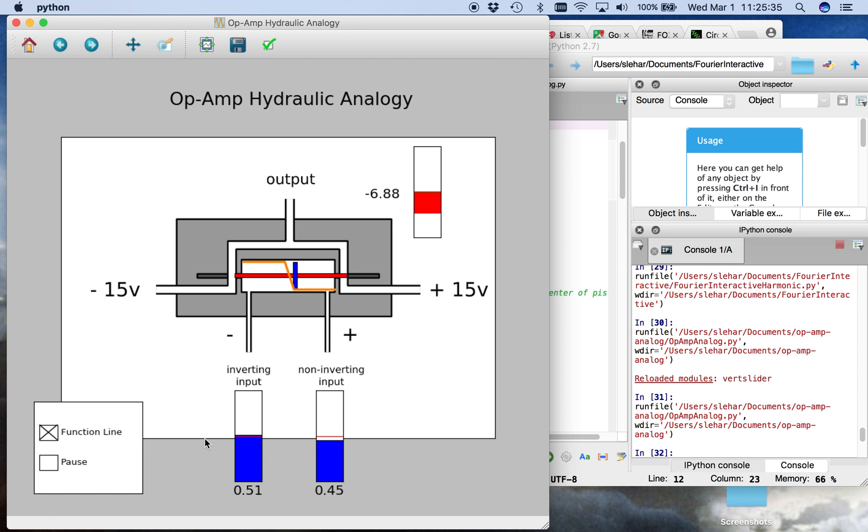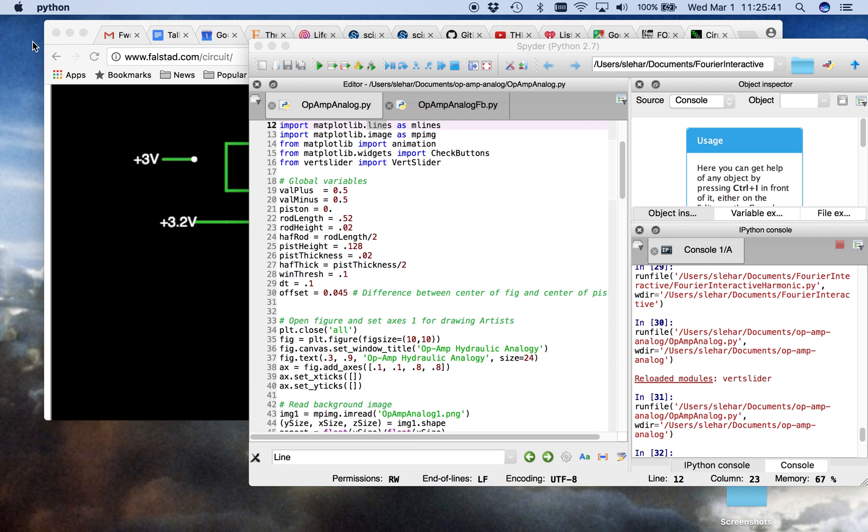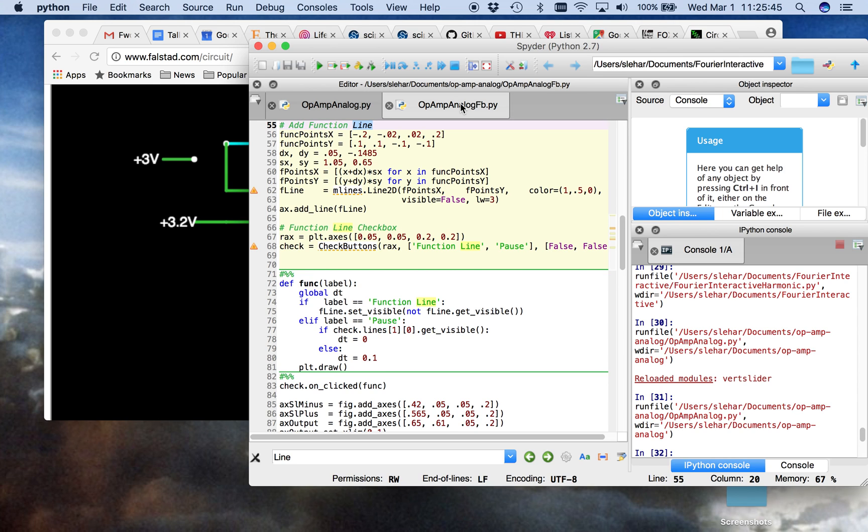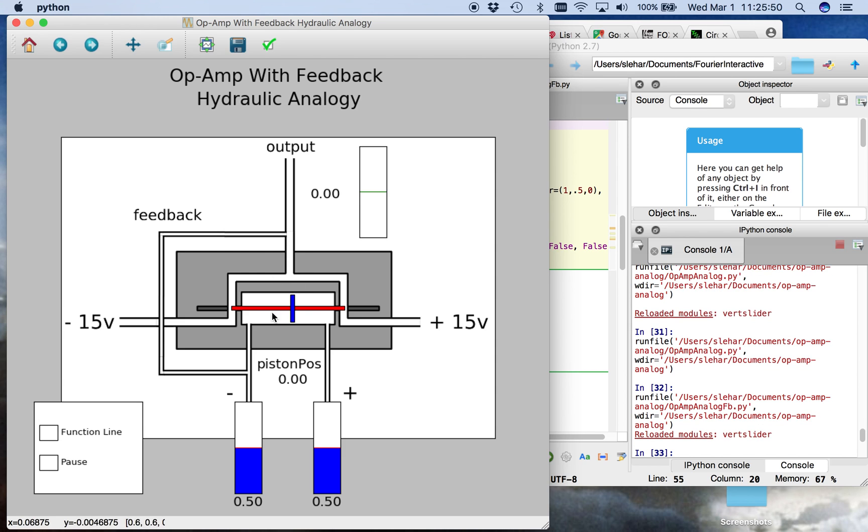Now to demonstrate how this works, we will now connect the output to the inverting input. So here, this is the same as before, except now the output is connected by this feedback line to the inverting input, and look what happens.